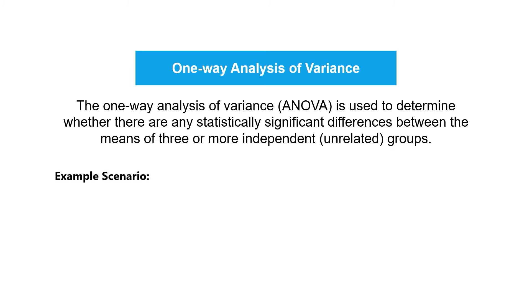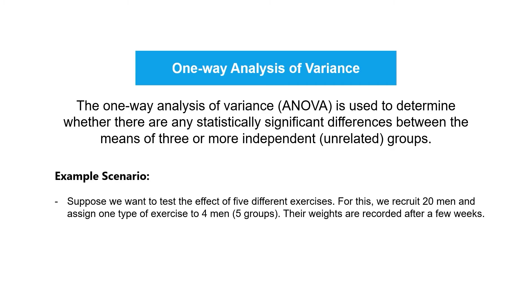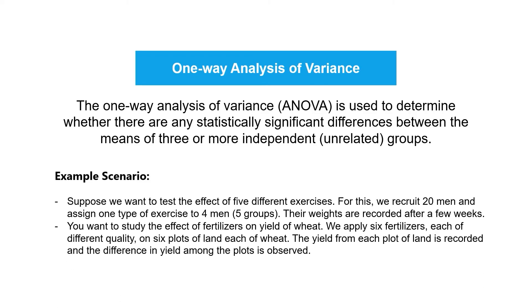Below are some examples where you can use analysis of variance. Suppose you want to test the effect of five different exercises — you recruit 20 men and assign one type of exercise to four men to form five groups. Notice that in each scenario we have more than two independent groups. This is the key difference between one-way analysis of variance and the independent t-test.